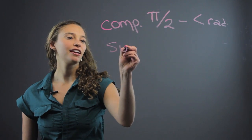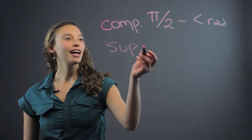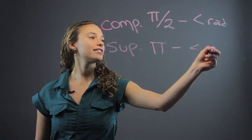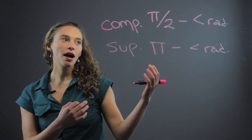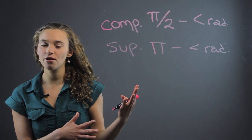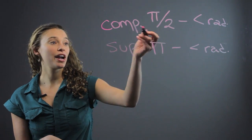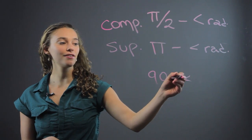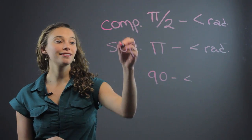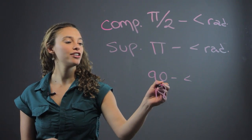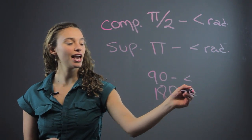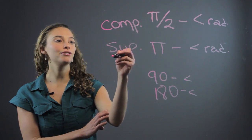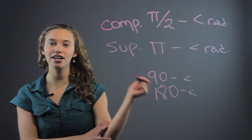For supplementary angles, that's equal to pi minus the angle in radians. This is kind of easy to remember. Usually you're more familiar with degrees, where complementary is 90 minus the angle in degrees, and supplementary is 180 minus the angle. Two complementary angles added up equal 90, and two supplementary angles added up equal 180.